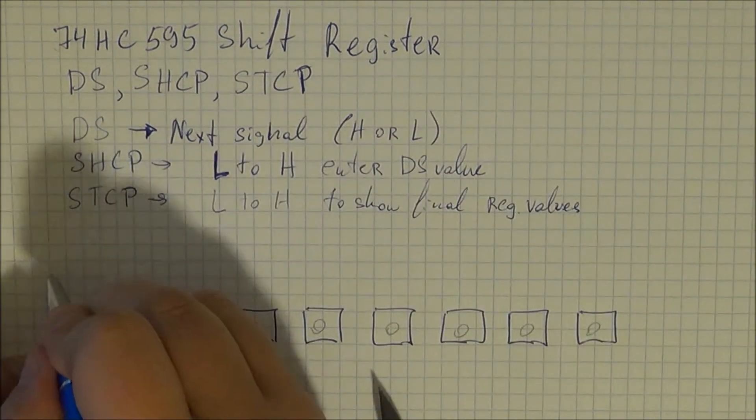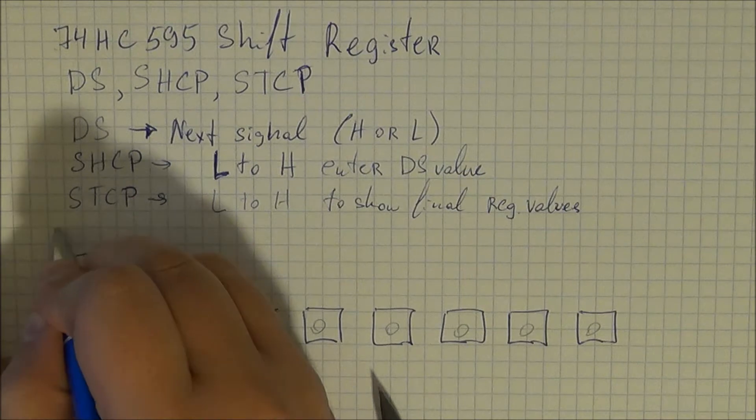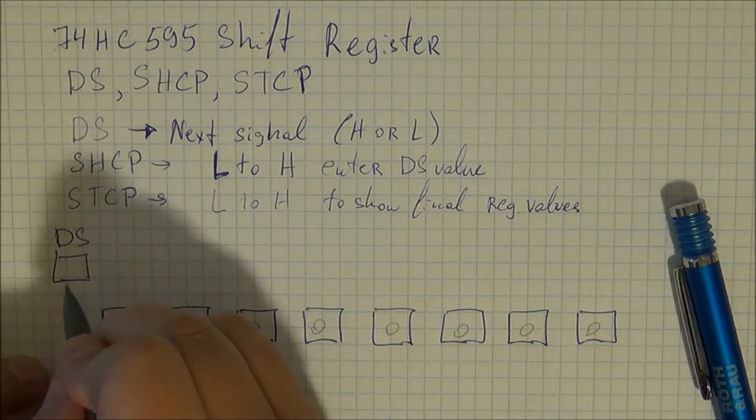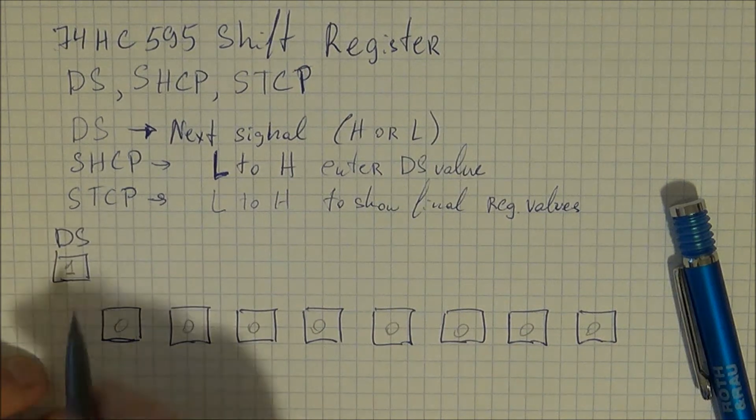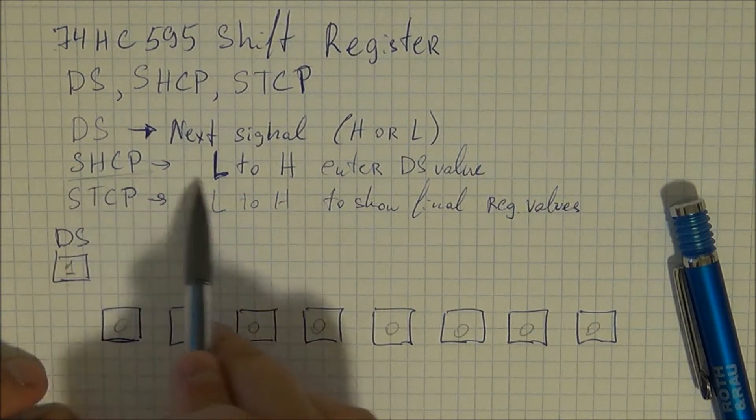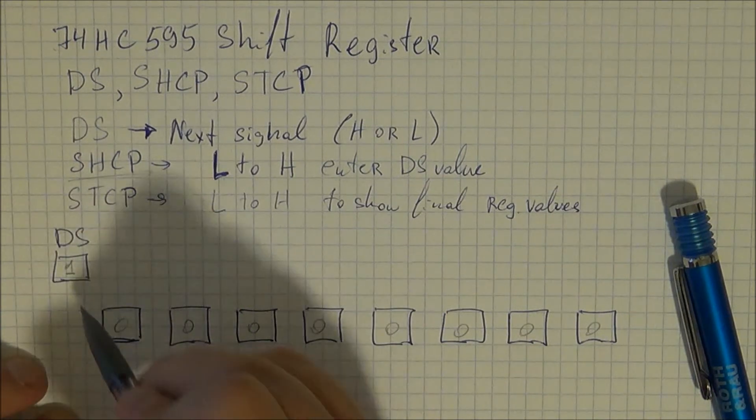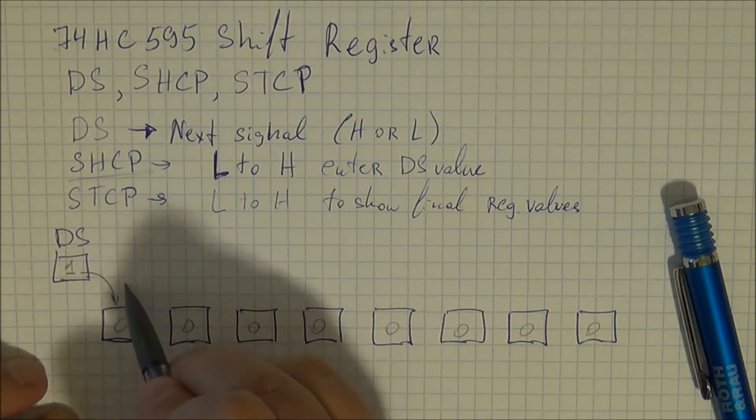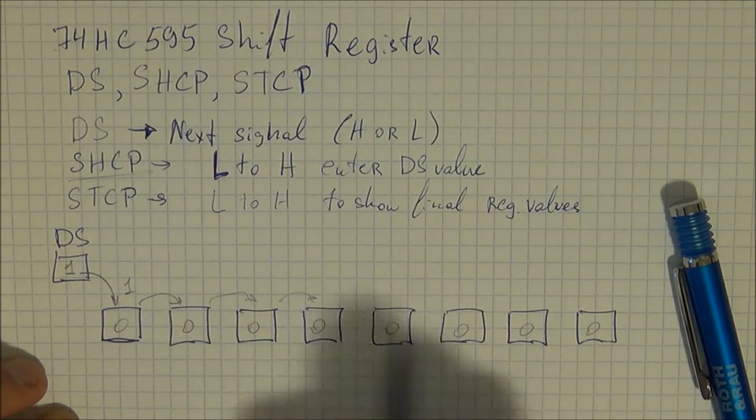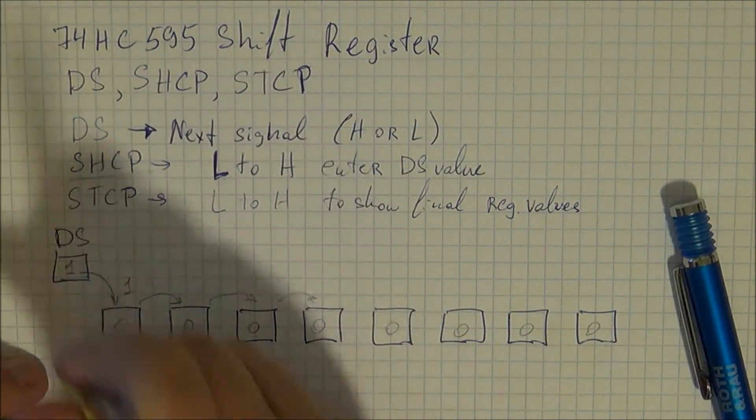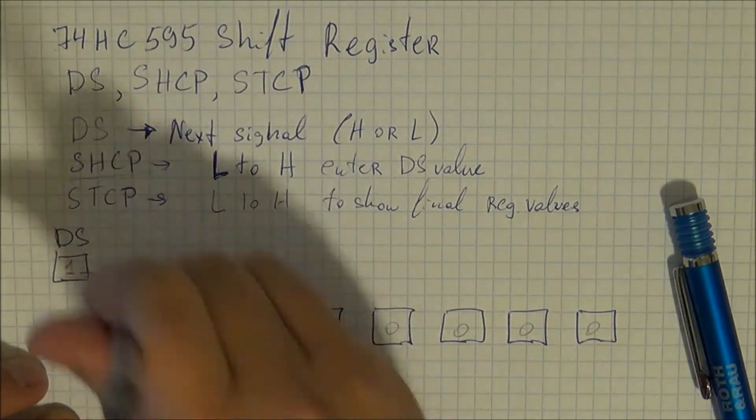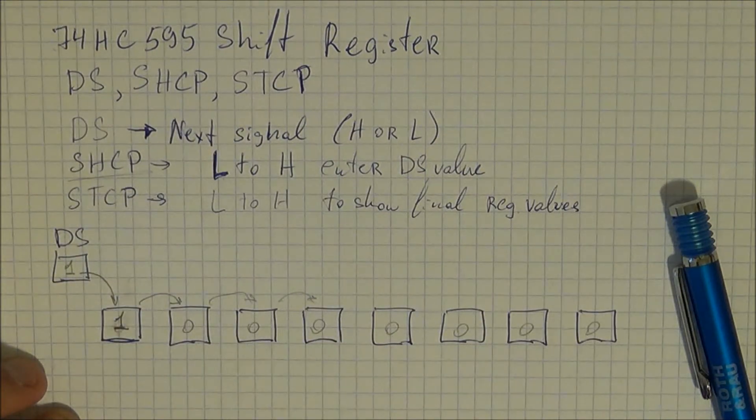And you have also a DS pin right. So let's say you set this to one. So your pin is currently high and you initiate an SHCP low to high. What that does is you shift a one into the cell and each cell moves over. So obviously here you're going to have zeros. You're going to get a one and you're going to get the rest zeros right.